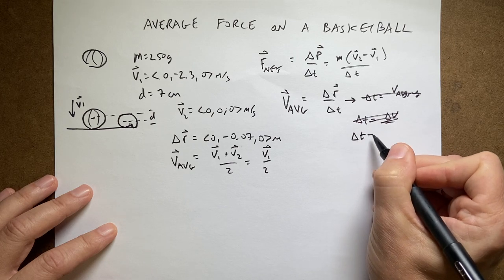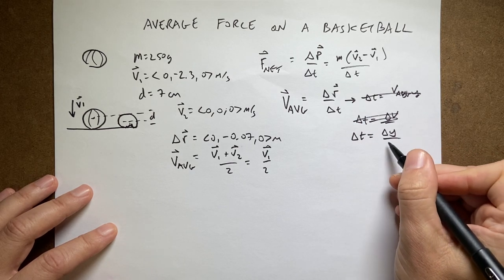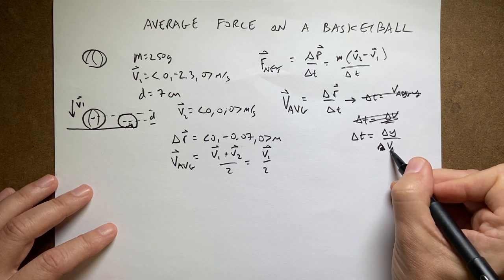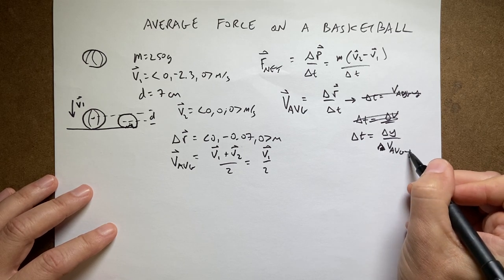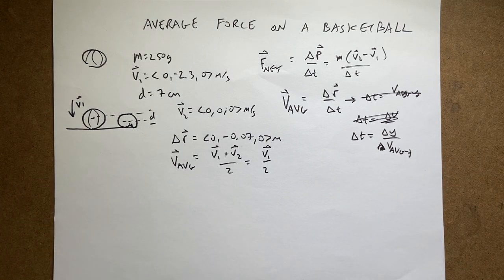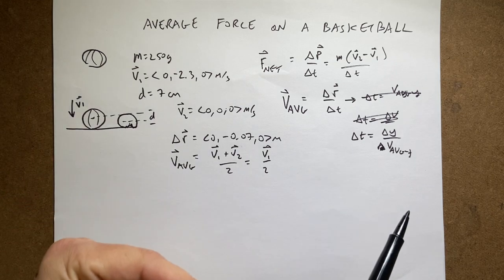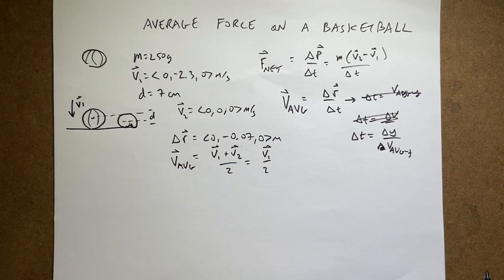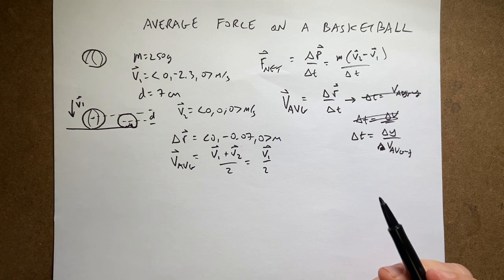Delta t equals delta y over v average y. And I did this way because you can do it for each component of the vectors. You can't take a vector divided by a vector. I couldn't write this as delta r over delta v average because there's two vectors, but I can do the components right. All the component ratios should have the same time.